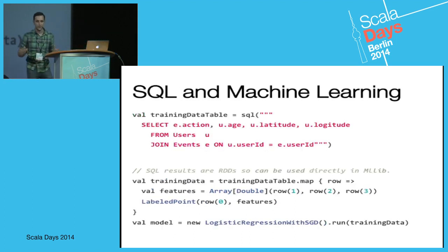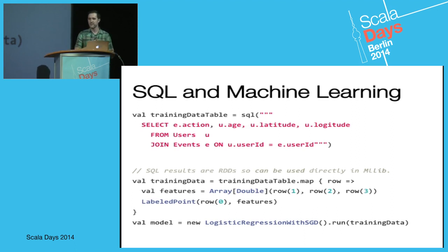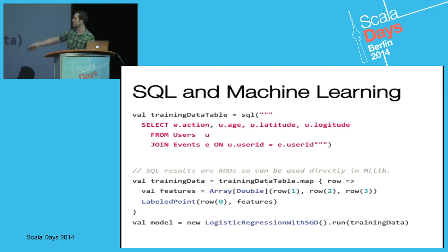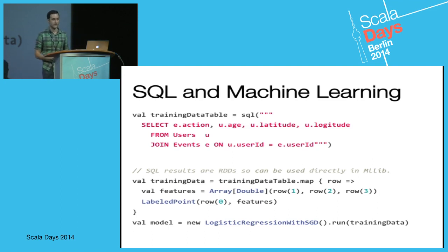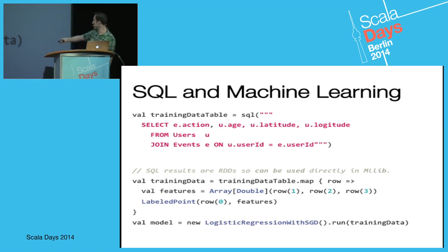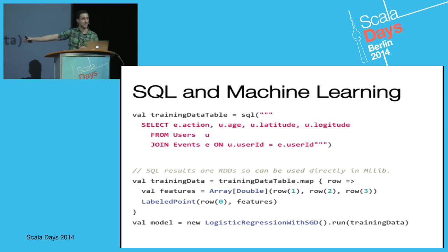Let's talk about going back and forth between functional and relational programming. Say we're a web company with a set of actions and a set of users, and based on user demographics we want to predict which users are likely to take actions in the future. The first step involves data munging — we want to do a join and pull out only the features we're interested in. This is a task SQL is uniquely suited for. You can express this as SQL, get an RDD back, and since it's just an RDD, immediately drop down into Scala, create an efficient double array feature vector, and feed it into MLlib to perform logistic regression.